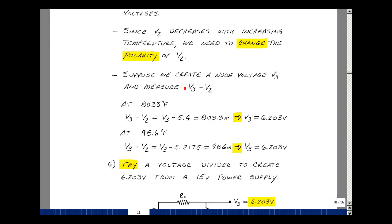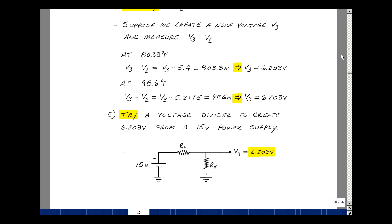We need to create a voltage V3 such that V3 minus V2 is 803.3 millivolts at 80.33 degrees Fahrenheit. The difference of V3 and the 5.4 volts means that V3 is 6.203 volts. Likewise, at 98.6 degrees Fahrenheit, the difference of these two node voltages needs to be 986 millivolts, giving V3 equals 6.203 again. The reason for this is that the variation with temperature is a straight line. I need to create a voltage of 6.203 volts.